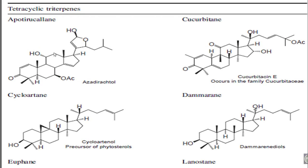Some of the major structures of triterpenoids include cycloartenol, azadrachitol, cucurbitane, beta-sitosterol, lanostane, and euphan. The cycloartan series, azadrachitols, damarans, cycloartanols, lanostane, and euphan represent the major structural arrangements and determinations of the most common triterpenoids.